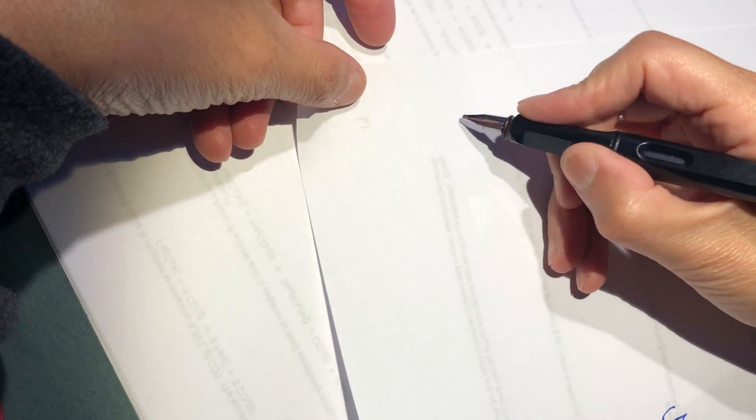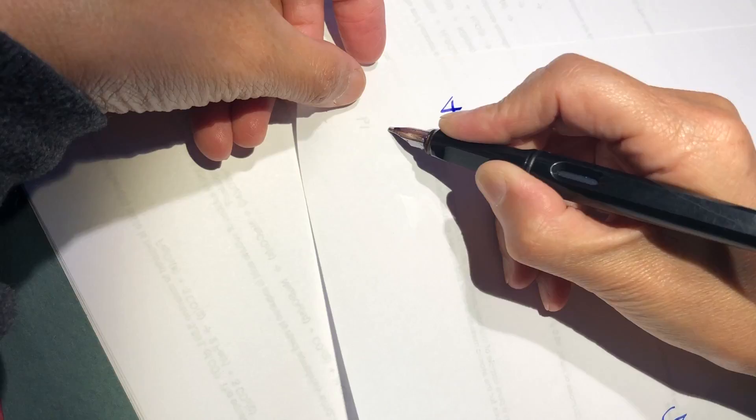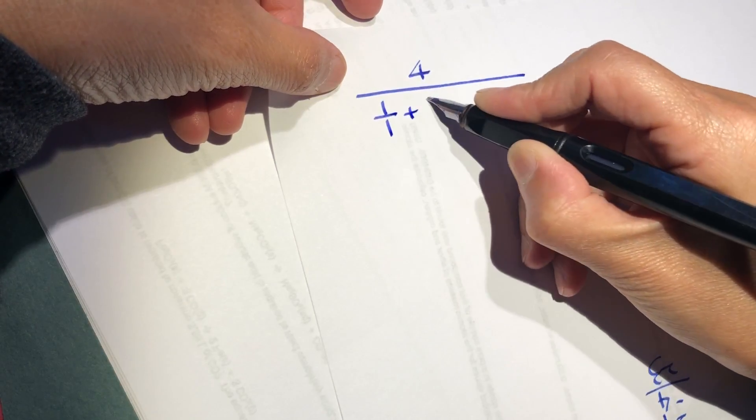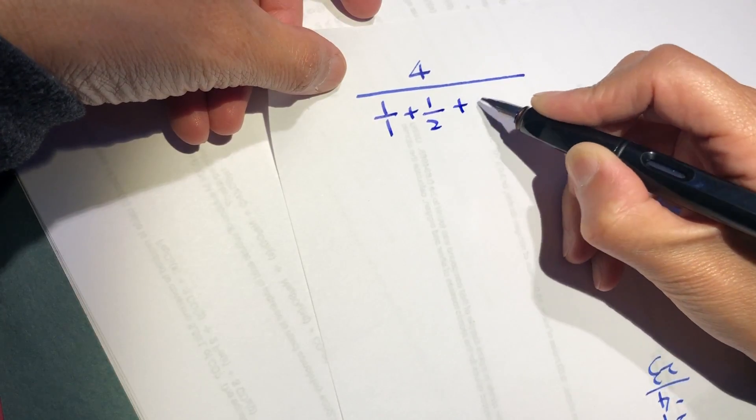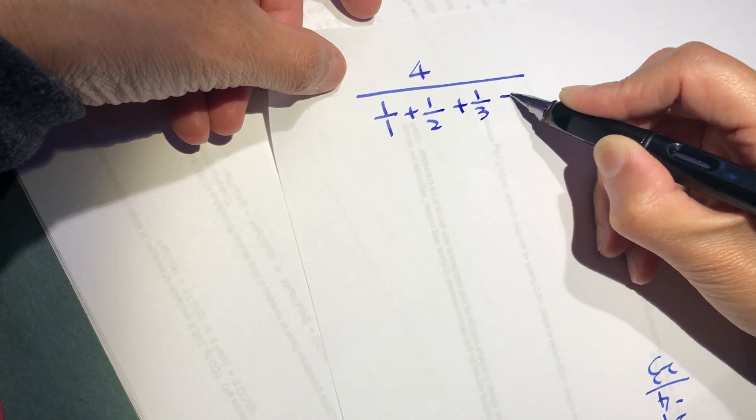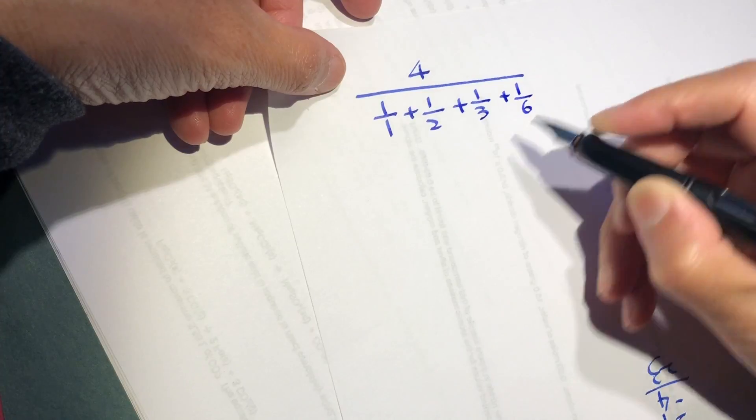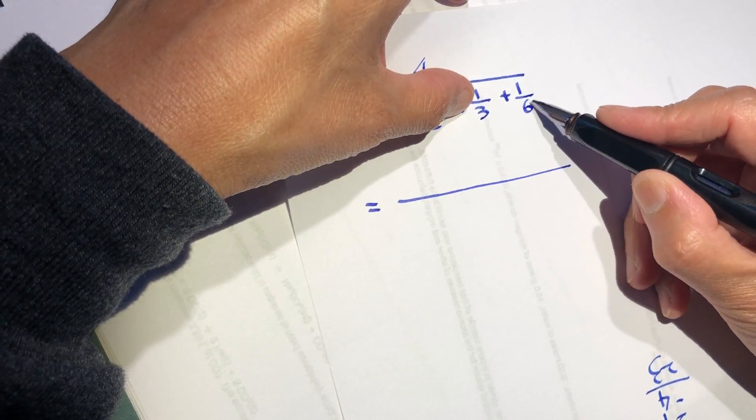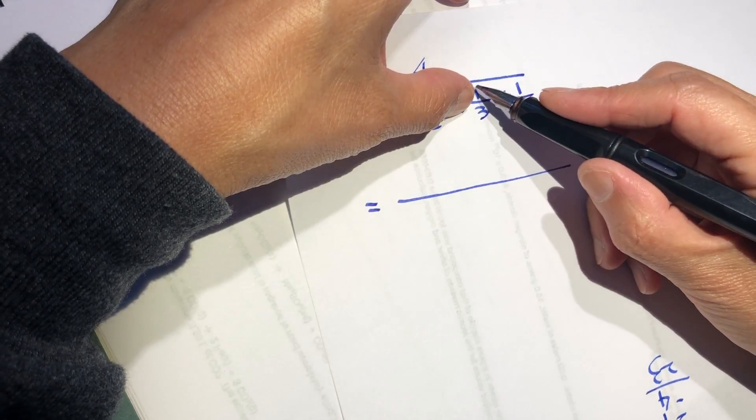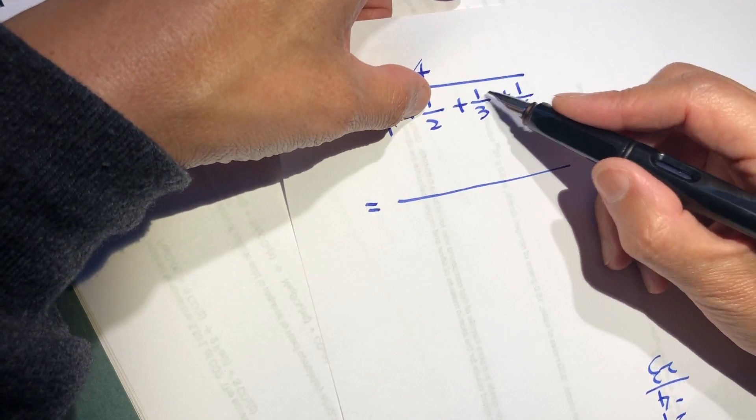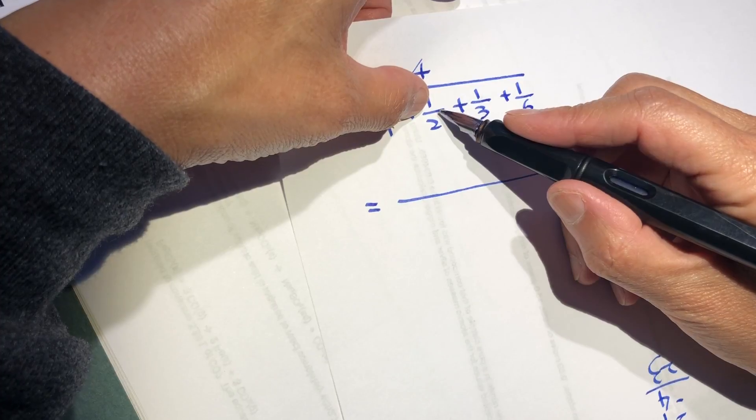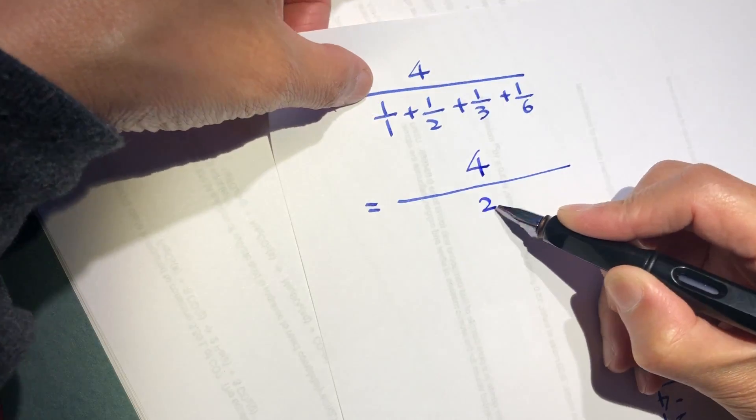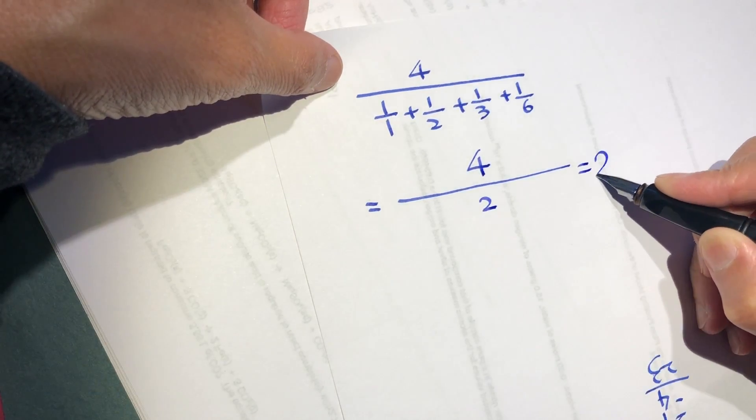Okay, we have another problem: 4 over 1 over 1 plus 1 over 2 plus 1 over 3 plus 1 over 6, equal to... And this one becomes 6 over 1, 6 over 2 is a half. Half plus half is 1, 1 plus 1 is 2. So 4 over 2 equal to 2.